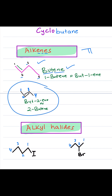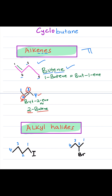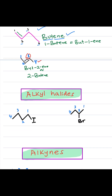In this next example, the double bond is between carbon number 2 and number 3, and it still has 4 carbons, so the parent name is still butene. But now we have to show the position of the double bond — it's on carbon number 2 and 3, and because 2 is lower, it becomes 2-butene, or but-2-ene.